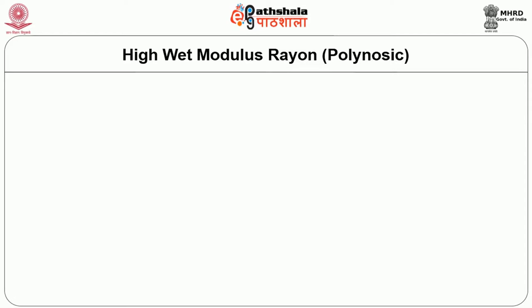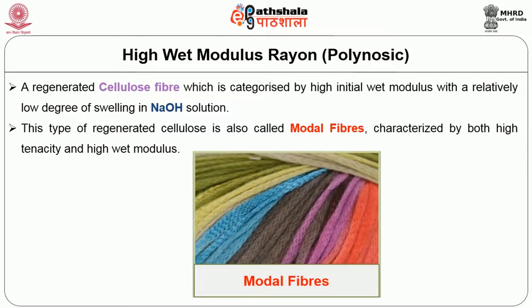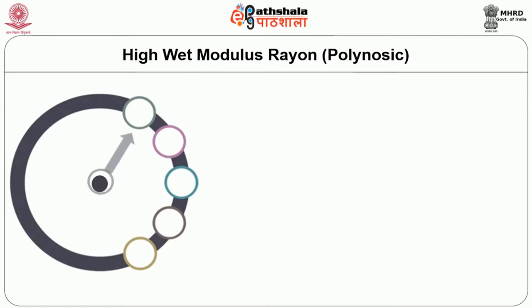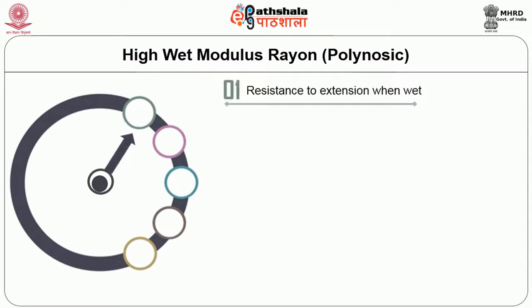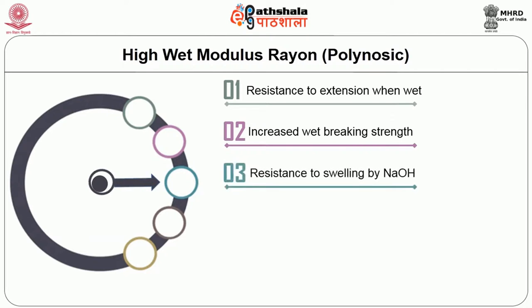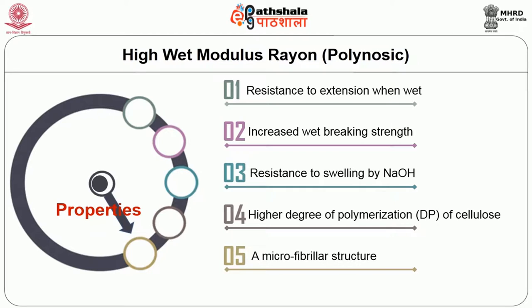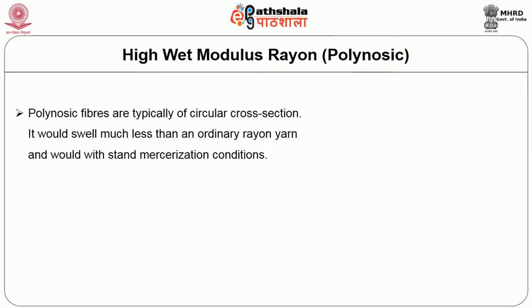High Wet Modulus Rayons, also called polynosic. A regenerated cellulose fiber categorized by high initial wet modulus with a relatively low degree of swelling in any NaOH caustic soda solution. This type of regenerated cellulose is also called modal fibers, characterized by both high tenacity and high wet modulus. The high wet modulus fibers have the following properties: resistance to extension when wet, increased wet breaking strength, resistance to swelling by caustic soda, and high degree of polymerization of cellulose and microfibrillar structure. Polynosic fibers are typically of circular cross section.